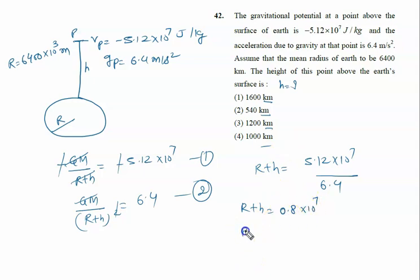So let us convert to kilometers. r plus h equals 0.8 times 10 to the power 7 meters, which equals 8000 kilometers.